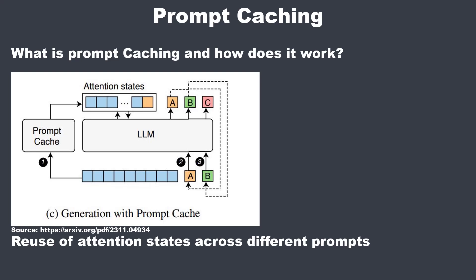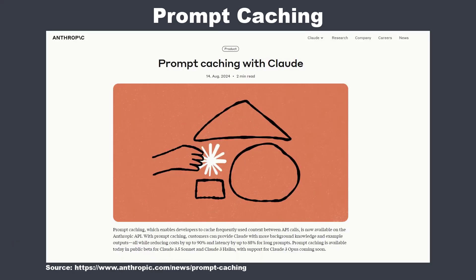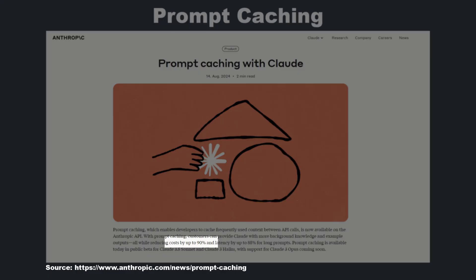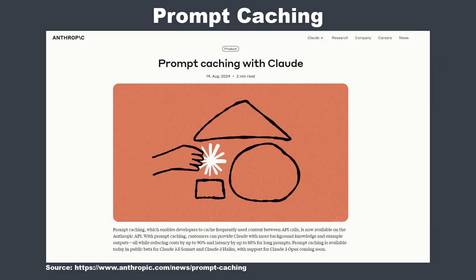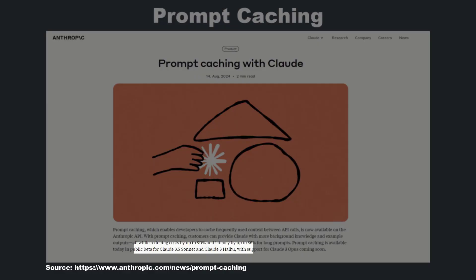This is especially useful when prompts have overlapping segments like standard system messages or commonly used templates. By pre-computing and storing these segments, prompt caching reduces the need for repeated calculations, making text generation faster and more efficient. Anthropic states you can reduce costs up to 90% and latency up to 85% for long prompts. Prompt caching is currently available for Claude 3.5 Sonnet and Claude 3 Haiku.